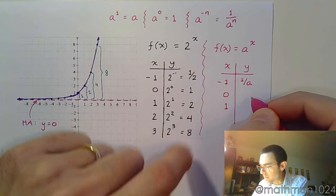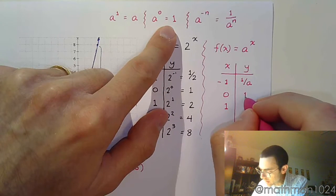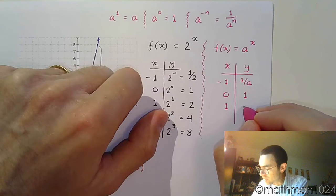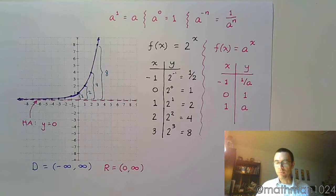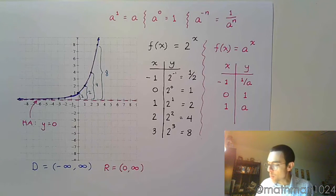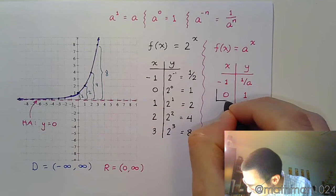If I plug in 0, I'm going to get 1. If I plug in 1, I get the base itself. So in this case, a. These are the key points for your parent function, with the heavy emphasis on this guy right here.